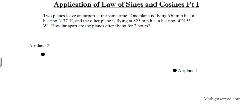Good day students. Welcome to this clip on the application of law of sines and cosines. Let's go ahead and take a look at the first problem, question number one on bearing. It says that two planes leave an airport at the same time. One plane is flying 650 miles per hour at a bearing of 37 degrees east of north, and the other plane is flying at 825 miles per hour at a bearing of 53 degrees west of north. How far are these planes after flying for two hours?